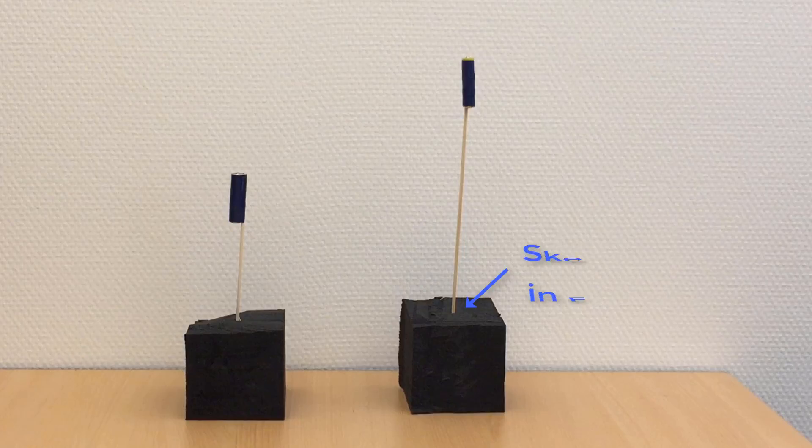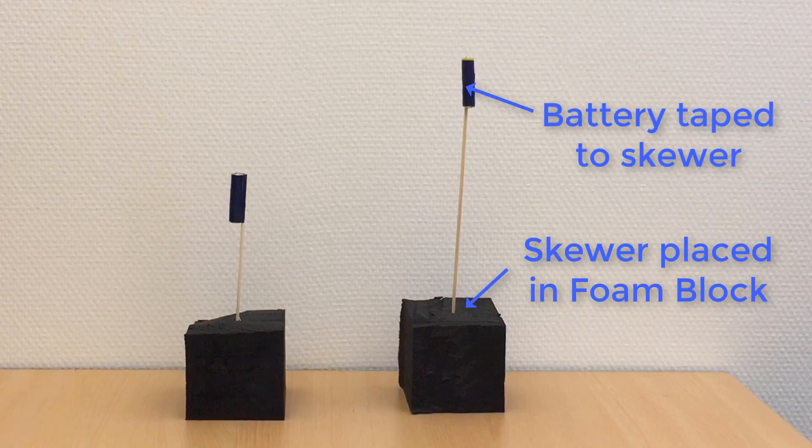One end of each skewer is pushed into the foam block, with the other end supporting a battery taped to it. The result is two systems that have the same mass, but slightly different designs.